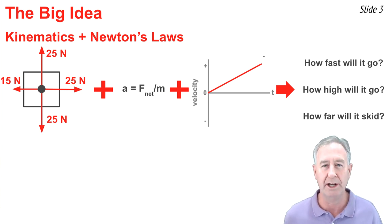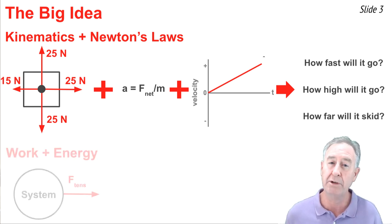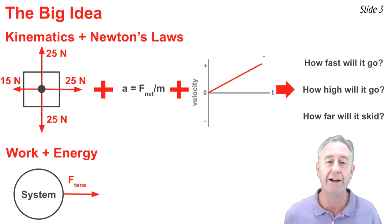In the work and energy model, we attempt to answer the same types of questions but do it in a different way. We imagine that object or collection of objects being a part of the system, and we look at how does the system interact with the surroundings, what forces act upon that system, that object or collection of objects.